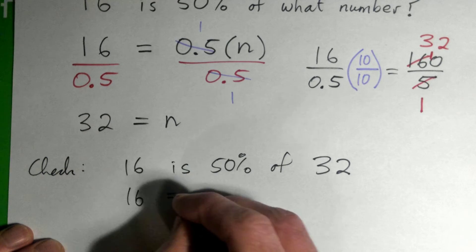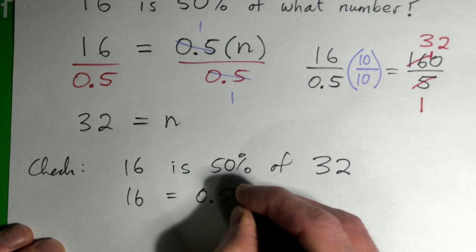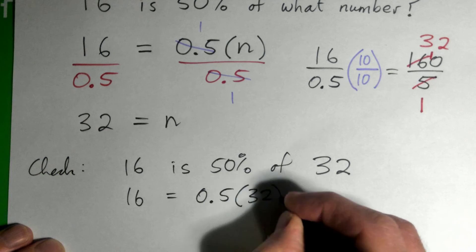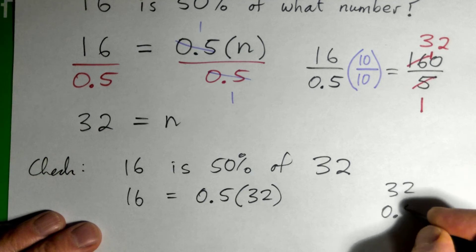Just checking this: 16 is 50 percent of 32. We can go, okay, 16 is 50 percent, 0.5, of times 32. And so I can go 32 times 0.5. If I was getting 50 percent of 32, I go 0.5 times 32.